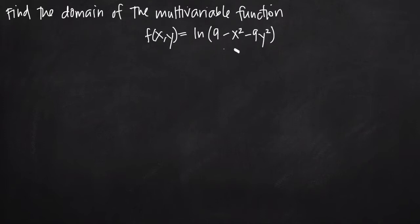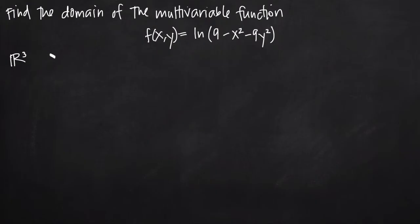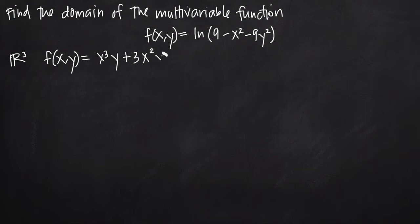All we're going to be doing is looking for points where this function is undefined. Sometimes you're going to have a multivariable function, like a polynomial function, that's defined for all real numbers in cubic space. In that case, the domain of the function is going to be all reals cubed — we write it with a superscript 3 to denote three-dimensional space. That would be for something like z equals x cubed y plus 3x squared y squared plus x plus 1 — a polynomial function defined everywhere.